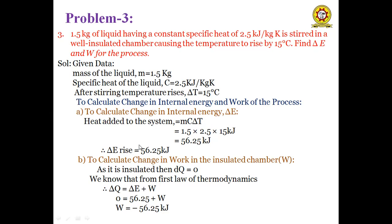Change in internal energy ΔE = 1.5 × 2.5 × 15 = 56.25 kJ. Therefore, internal energy increase is +56.25 kJ. For work in the insulated chamber: since it is insulated, ΔQ = 0. From first law: ΔQ = ΔE + W, so 0 = 56.25 + W, giving W = -56.25 kJ. The work of -56.25 kJ is supplied to the insulated chamber.